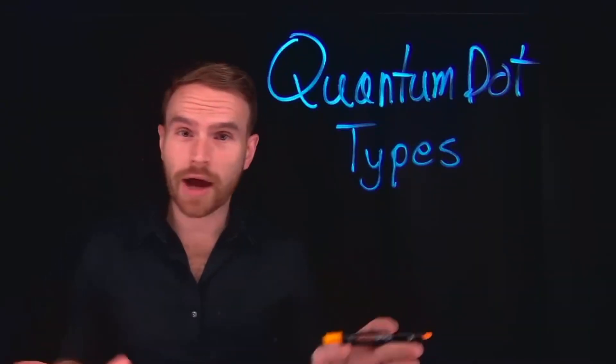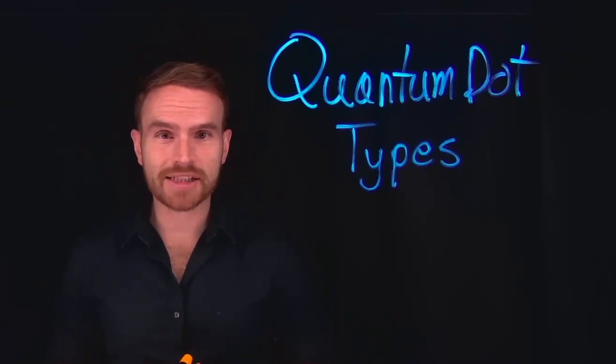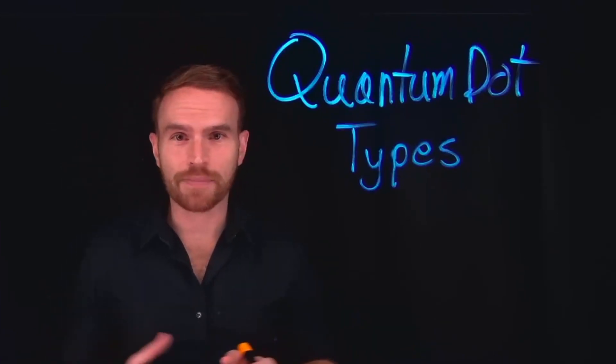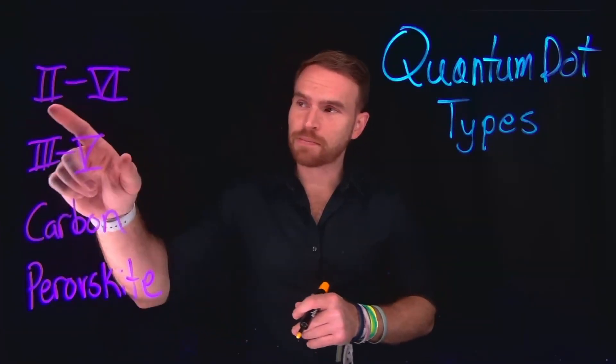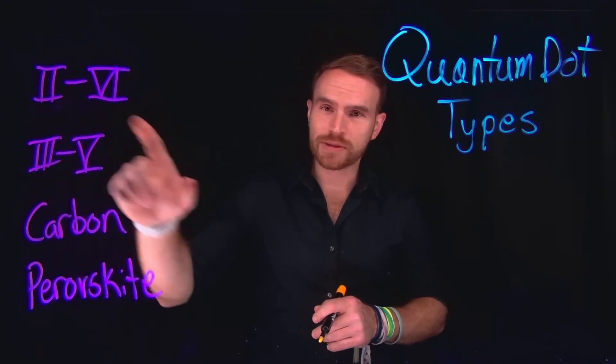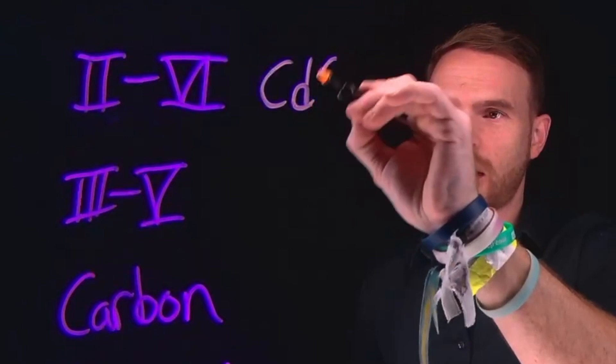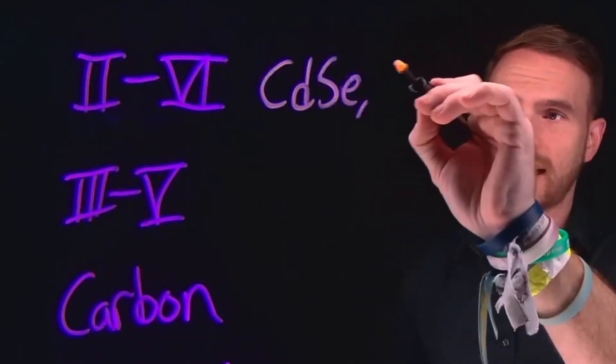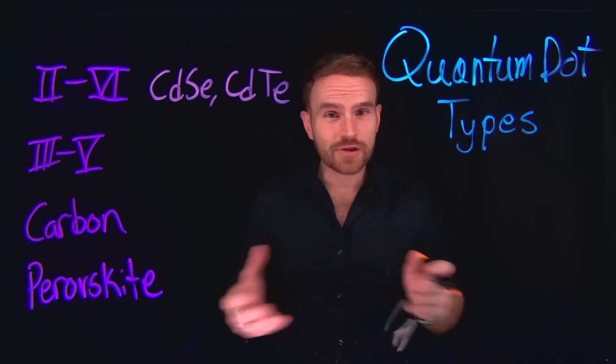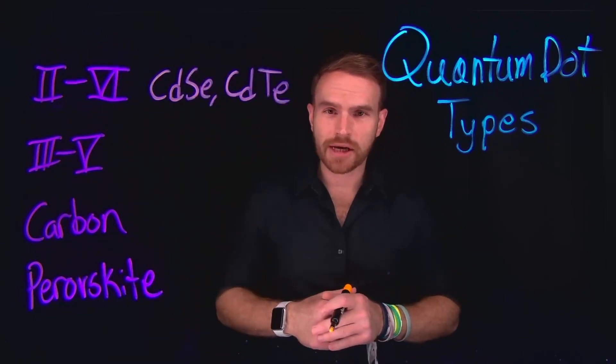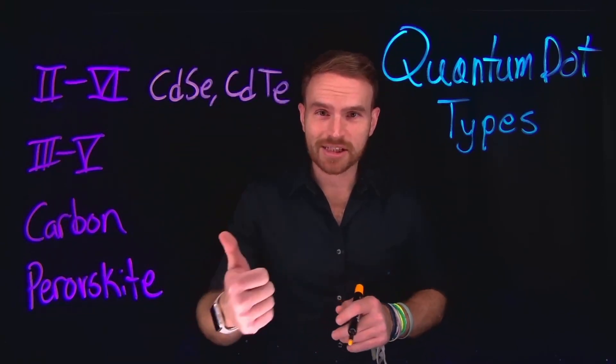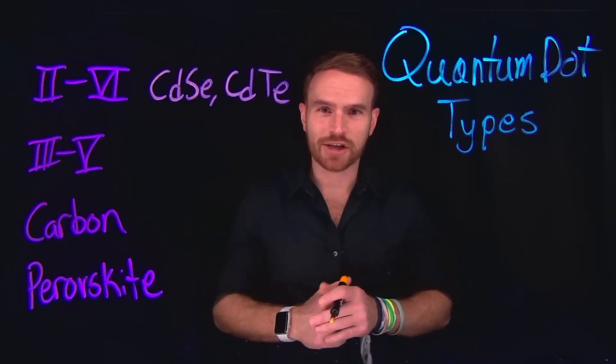Quantum dots are made up from a variety of different materials, typically classified by what are the elements that make up those quantum dots. The most common type is probably made up of group 2 and group 6 elements from the periodic table. Cadmium selenide is a very common example of this, although things like cadmium telluride also are widely prevalent. These are probably the most well-studied quantum dot types and are used for things like displays, solar cells, and even some biological imaging.